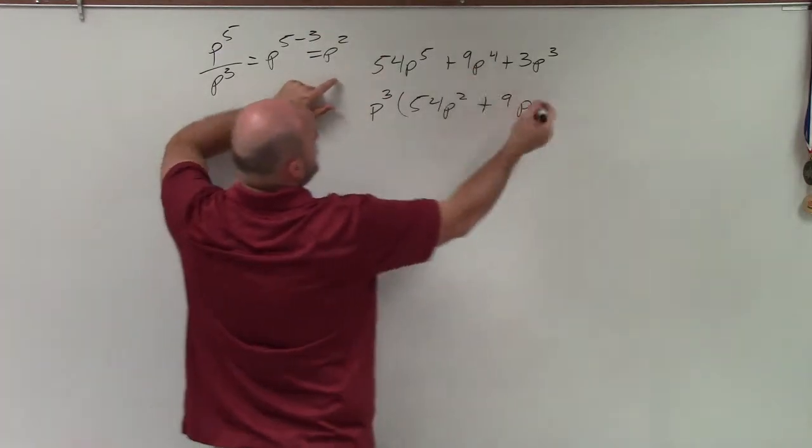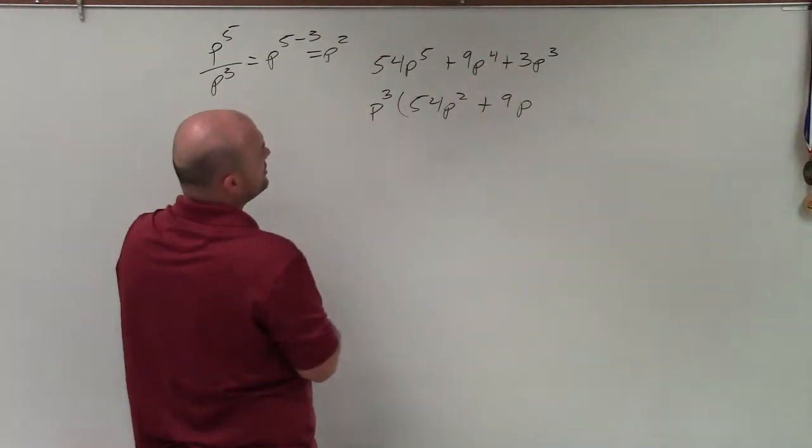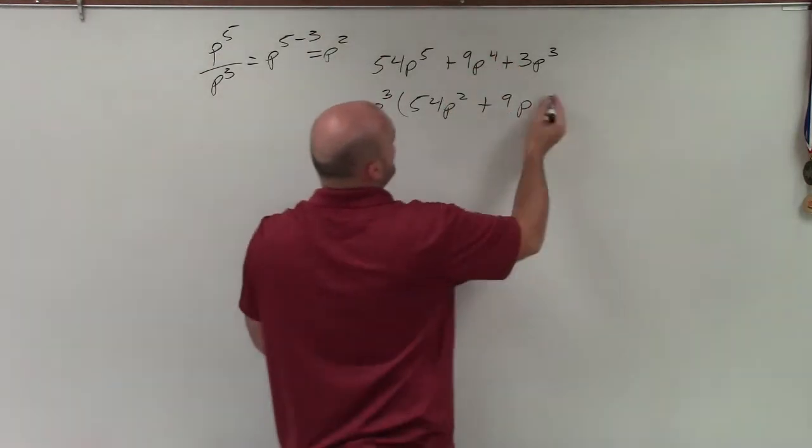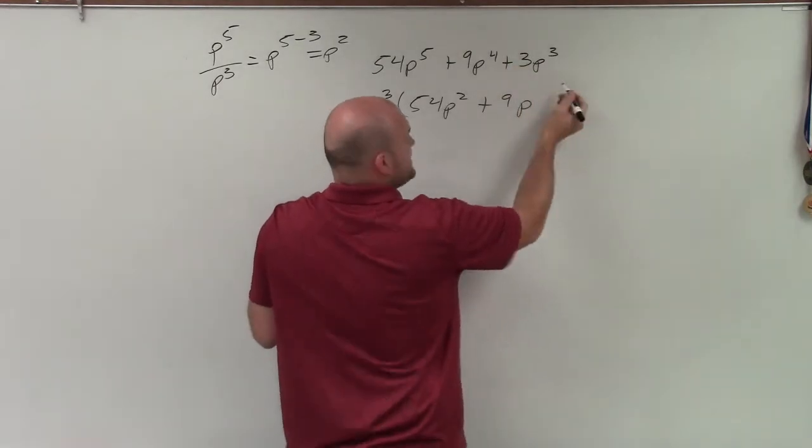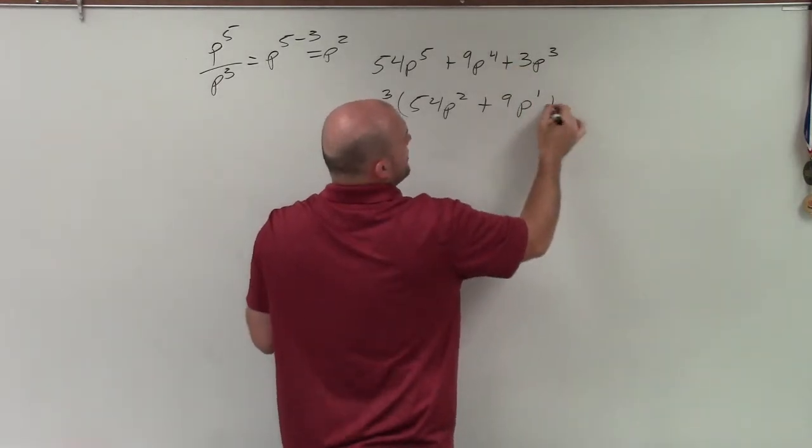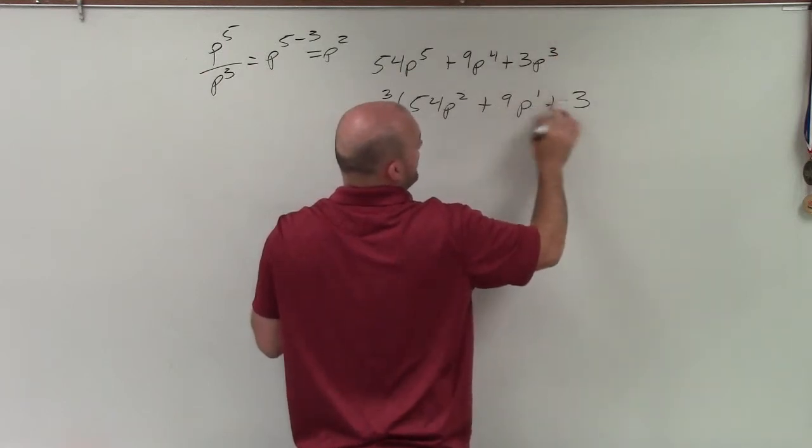And if I do it for 4, that'd be p cubed minus p to the 4, or 4 minus 3, which would be p to the first, which is just p, plus 3p to the 0, which is just 1.